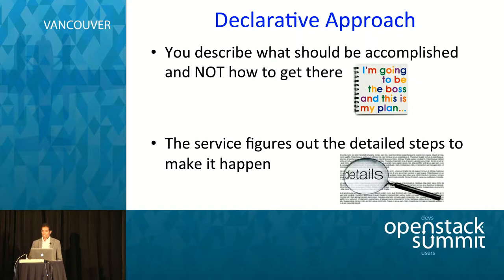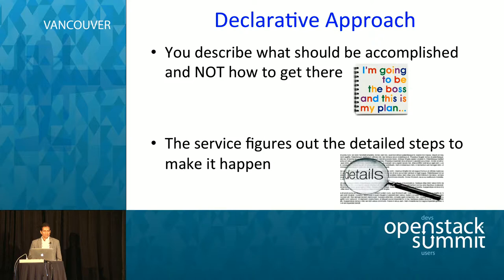What you are essentially going to do is to create a description of your infrastructure or your application architecture in a language that your service can understand. Then you are going to send that description over by an API call to the service. The service is going to parse all the details, do various analysis inside, and figure out what resources you want to create. Then it is going to go ahead and make all the necessary calls to the OpenStack services such as Nova, Neutron, Cinder, and so on, and finally deploy that service for you and report back on the state of that service.